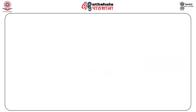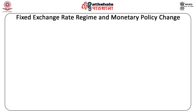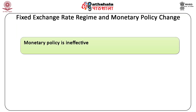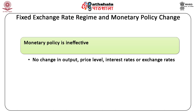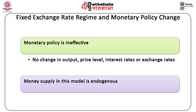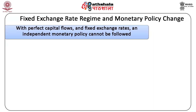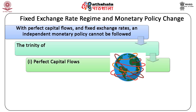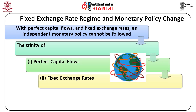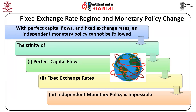Thus, under perfect capital mobility and fixed exchange rate regime, monetary policy is ineffective. There is no change in output, price level, interest rates, or exchange rates. Money supply in this model is endogenous — its level is determined by the model, not by monetary authorities. This shows that with perfect capital flows, fixed exchange rates and an independent monetary policy cannot be followed simultaneously. The trinity of perfect capital flows, fixed exchange rates, and independent monetary policy is impossible.